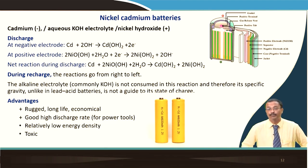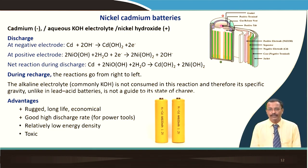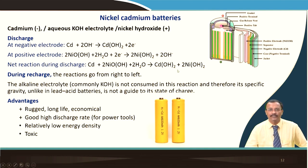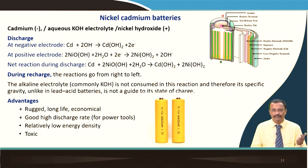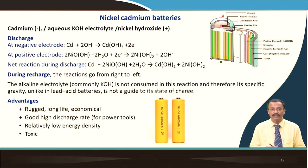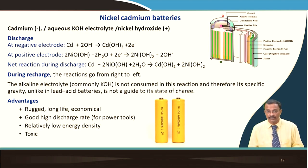Nickel cadmium battery was quite popular in the 1990s, but cadmium is not environmentally friendly, so its use has been almost discontinued. An aqueous KOH electrolyte is used with nickel hydroxide. The discharge reaction at the negative electrode is cadmium reacting with hydroxyl ions, and at the positive electrode nickel oxyhydroxide reacts with electrons. The alkaline KOH electrolyte is not consumed in this reaction, so its specific gravity — unlike lead acid — is not a guide for the state of charge.